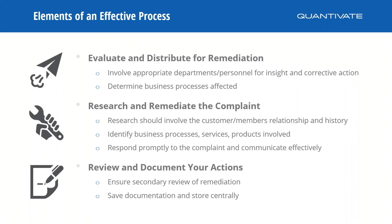For evaluating and distributing for remediation: the centralized person tags the right people — service providers, third-party vendor owners, department heads, branch managers, or individuals receiving repeated complaints. Involve the appropriate departments and personnel for insight and corrective action. Determine which business processes are affected — was it something done wrong or a miscommunication? Get the right people involved in that business process, and consider additional training if needed.